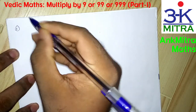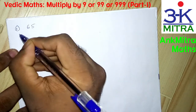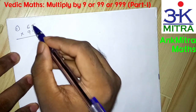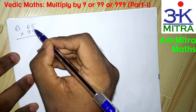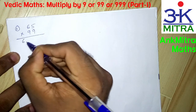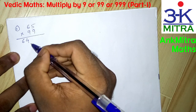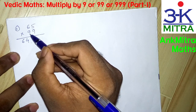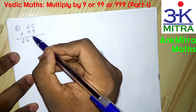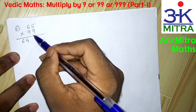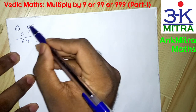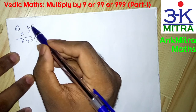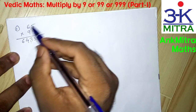First example: let's say we are supposed to multiply 65 by 99. Both have two digits. The procedure is very simple. What we do is reduce 1 from 65 to get 64, and we write down 64 here on the left. For the remaining place values, we subtract 65 from 100 — 100 being the base number for 99 — and we get 35. So 65 multiplied by 99 is 6435.